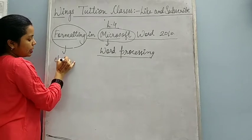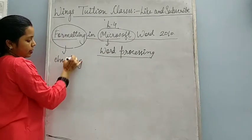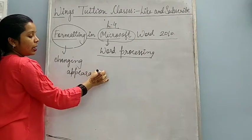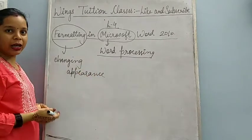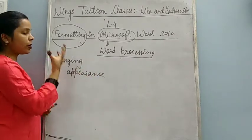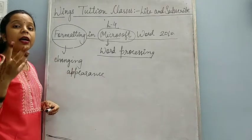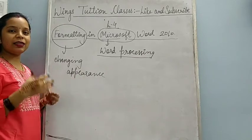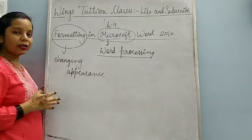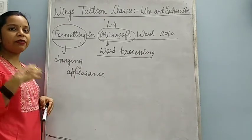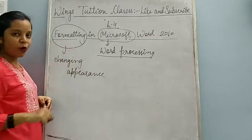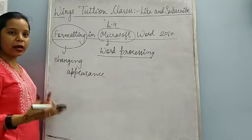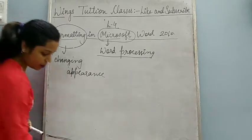Formatting means changing appearance — the look of anything. Like you have written a paragraph and you are changing the color, changing the style, changing the size of the font, applying different effects — that is known as formatting. So formatting means changing appearance, and that is what you will learn in this chapter.